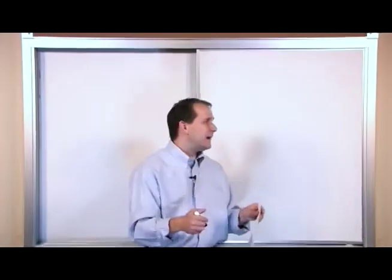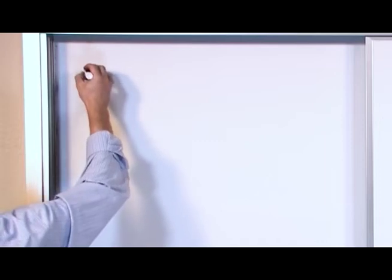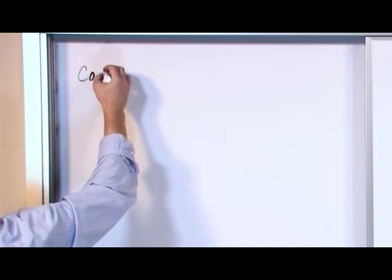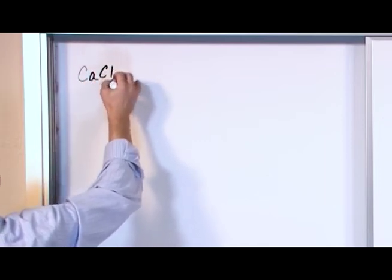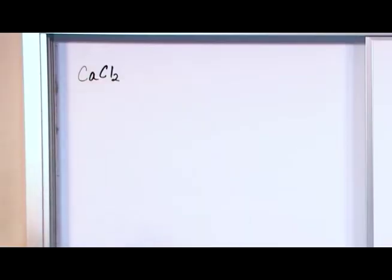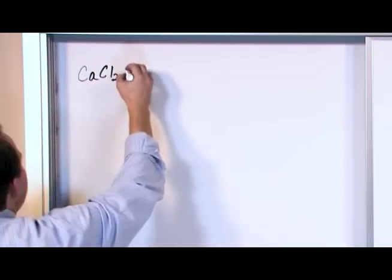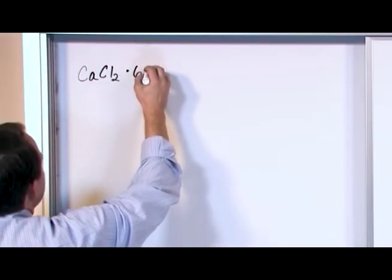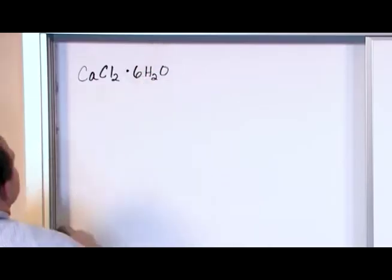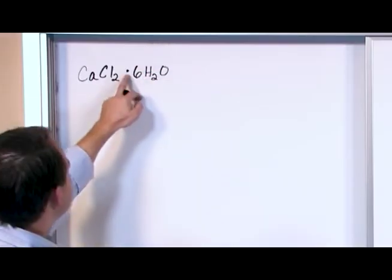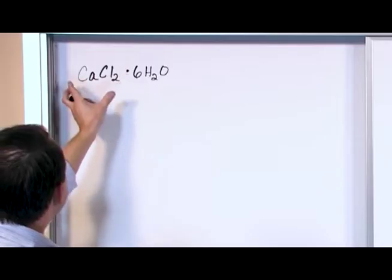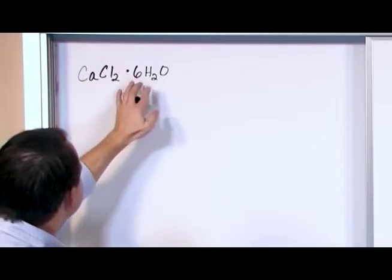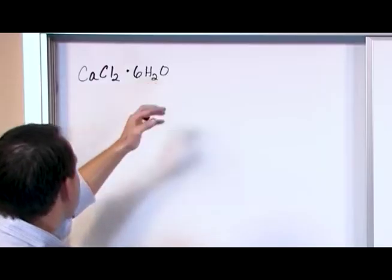The easiest way to get this across is to just show you how they're written. If I have calcium chloride, CaCl2 - this is nothing special, it's exactly the way you would write it if you just had calcium combining with chlorine. But if it's a hydrate, it might have six water molecules in there.